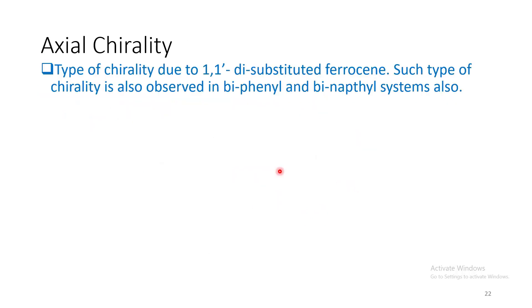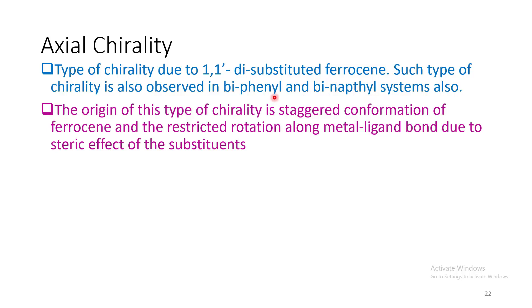Now axial chirality. This type of chirality happens due to 1,1'-disubstitutions. Such types of similar chiralities are also observed in biphenyl and binaphthyl systems also. Now this chirality is due to the staggered conformation of ferrocene and restricted rotation along the metal-ligand bond due to the steric effect of the substituents.